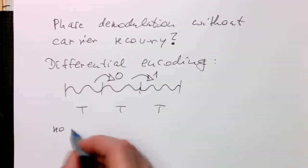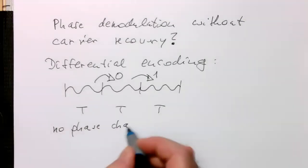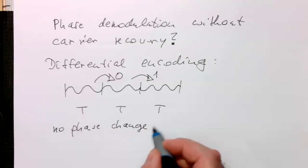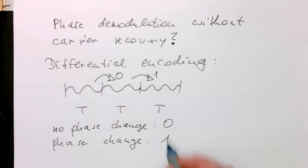So in other words, the transition is coding the information. No phase change means it's a zero. And if there's a phase change between two of these chunks at length T, then it's a one.